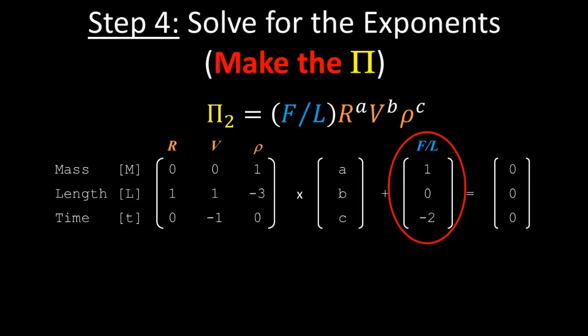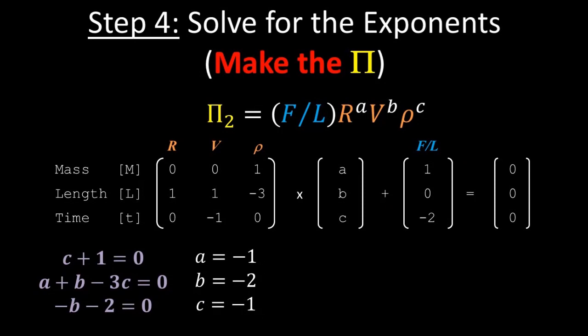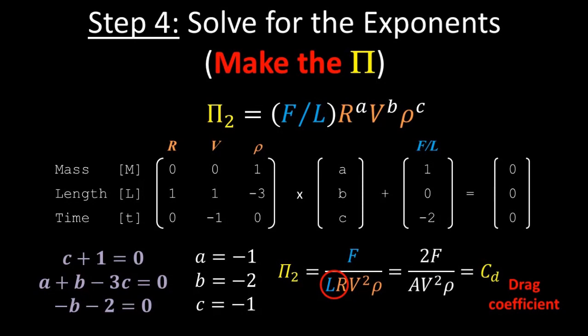Let's now do the same for pi2, with force per length as its primary variable. If you have the matrix, or table, already set up, we just need to swap out the exponents for the primary variable, and reconstruct the new system of equations. Solving, we get a equals minus one, b equals minus two, and c equals minus one. So pi2 turns out to be force divided by density, velocity squared, radius, and length. Note that radius times length is half the cross-sectional area of the cylinder. After a bit of rewriting, this parameter is another well-known dimensionless parameter, called the drag coefficient. At this point, some of you might have some technical questions about this process. If you stick around until the end of the video, I'll do a bit of Q&A to hopefully clarify some things.